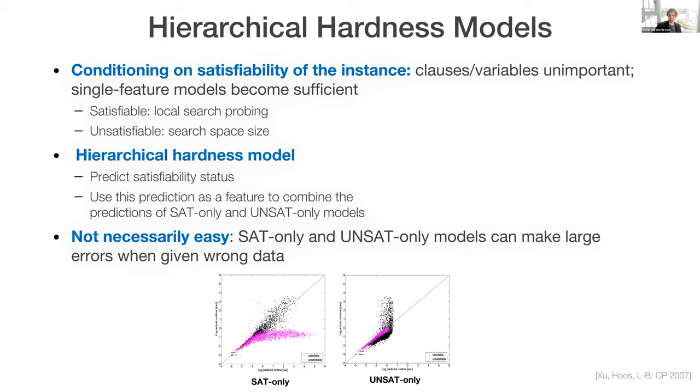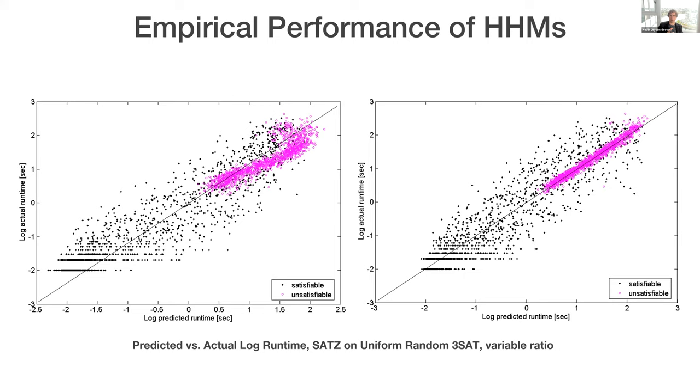Nevertheless, we showed in joint work with Ling Xu and Holger Hus back at CP in 2007 that we could do much better with this kind of an approach. So here's the same graph I showed you before on the left, and then a graph on the same data using this hierarchical hardness model approach, and you see that we really managed to reduce the variance substantially, especially visible in the unsatisfiable instances.